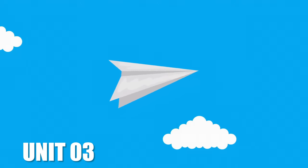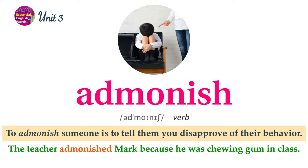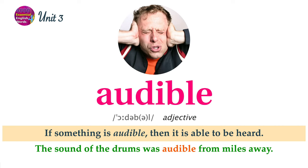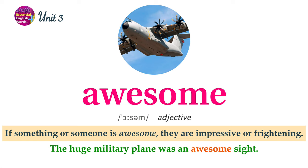Unit 3 Word List. To admonish someone is to tell them you disapprove of their behavior. The teacher admonished Mark because he was chewing gum in class. If something is audible, then it is able to be heard. The sound of the drums was audible from miles away. If something or someone is awesome, they are impressive or frightening. The huge military plane was an awesome sight.